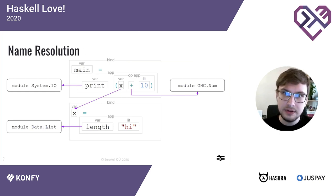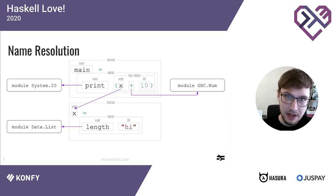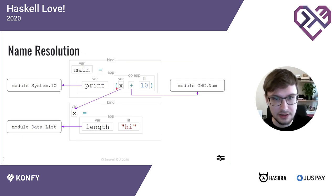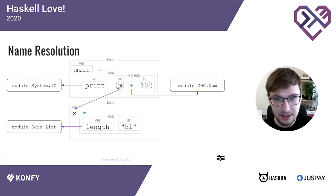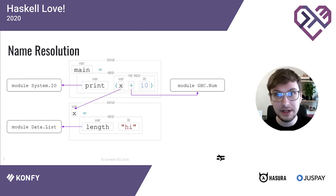So we do name resolution to figure out which name refers to what. Here, 'print', 'plus', and 'length' are imported from other modules, but 'x' is defined in the same module. This scope information is demonstrated with arrows, but in the compiler it's recorded as unique identifiers.